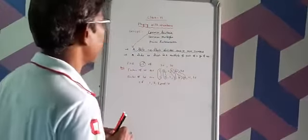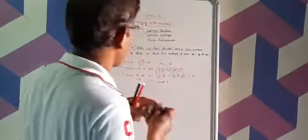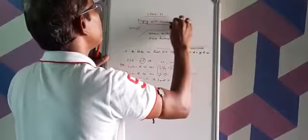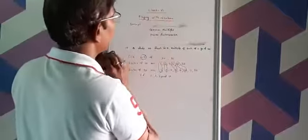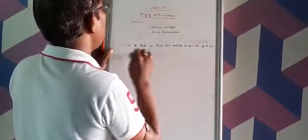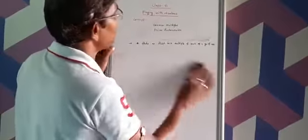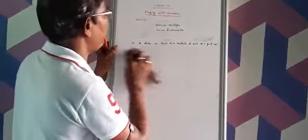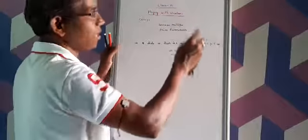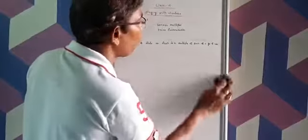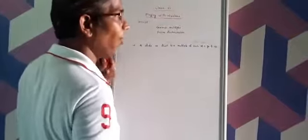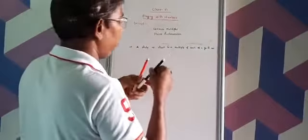Now we discuss Common Multiples. Common multiples means a whole number which is a multiple of each of a group of numbers. We have to select a whole number and check that this whole number is a multiple of a group of whole numbers. Then, only we can say that this whole number is a common multiple of the group of numbers.